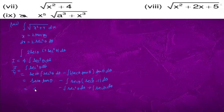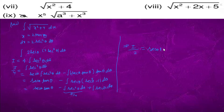Here we have secθ tanθ. Bringing the I/4 term to the left side, it becomes I/2 = secθ tanθ + ln|secθ + tanθ| + C, using the standard integral of secθ.